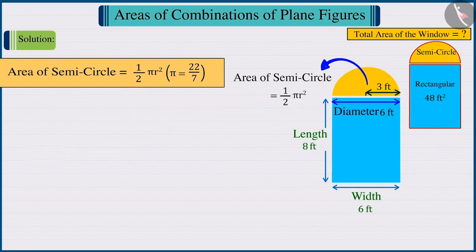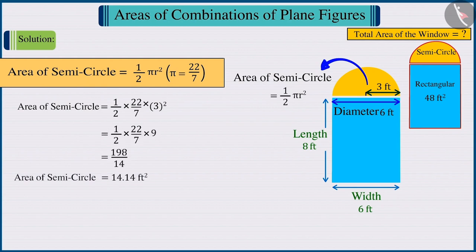Hence, placing the value of r in the formula for the area of a semicircle and solving, we obtain the area of the semicircle, which is the area of the upper portion of the window: 14.14 square feet.